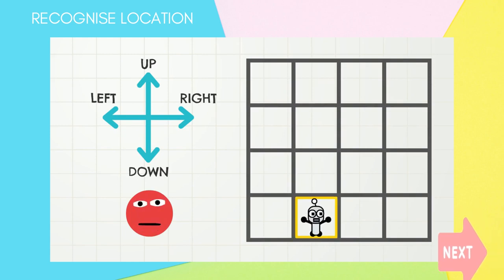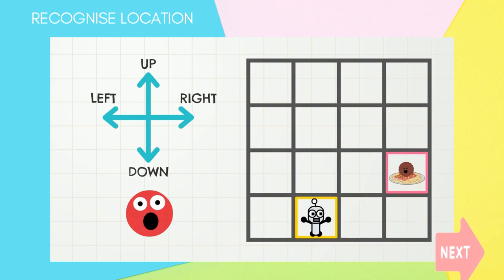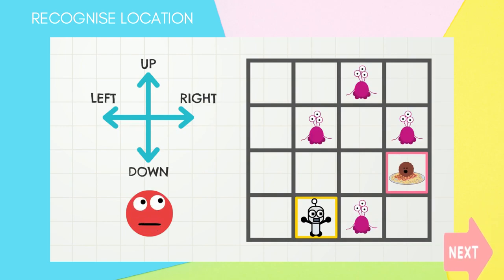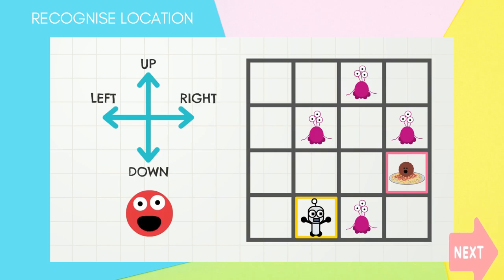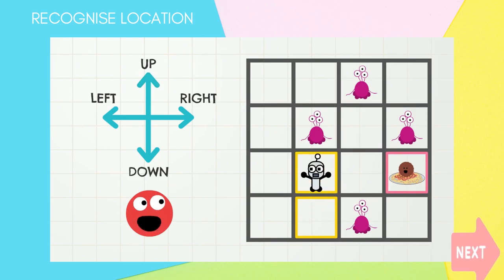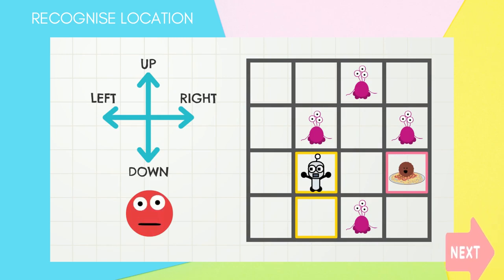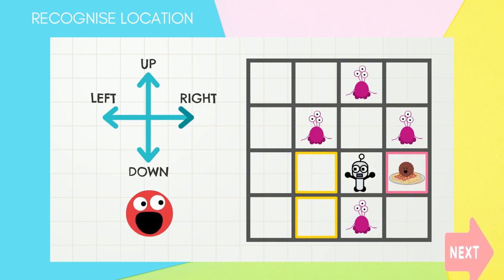Let's play again! Tiny Robot is still hungry and wants another plate of spaghetti. This time, Tiny Robot has to watch out for monsters and cannot go on the squares with the monsters. What way should Tiny Robot go first? I think Tiny Robot should go up one square. Now, Tiny Robot should go right two squares — one, two! Good job, Tiny Robot!